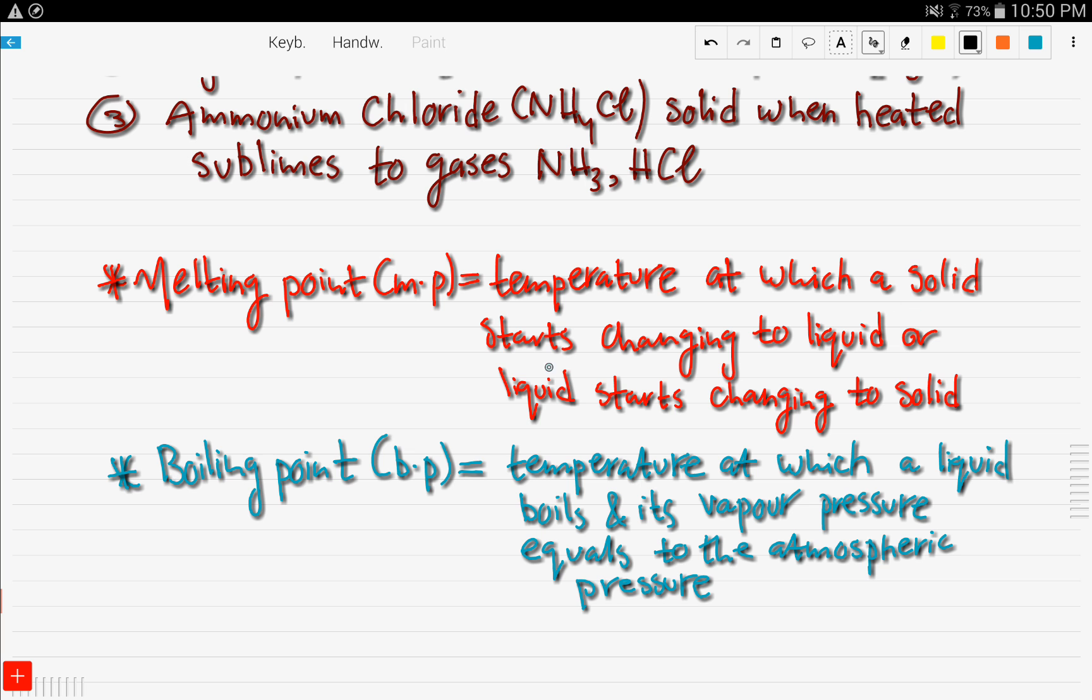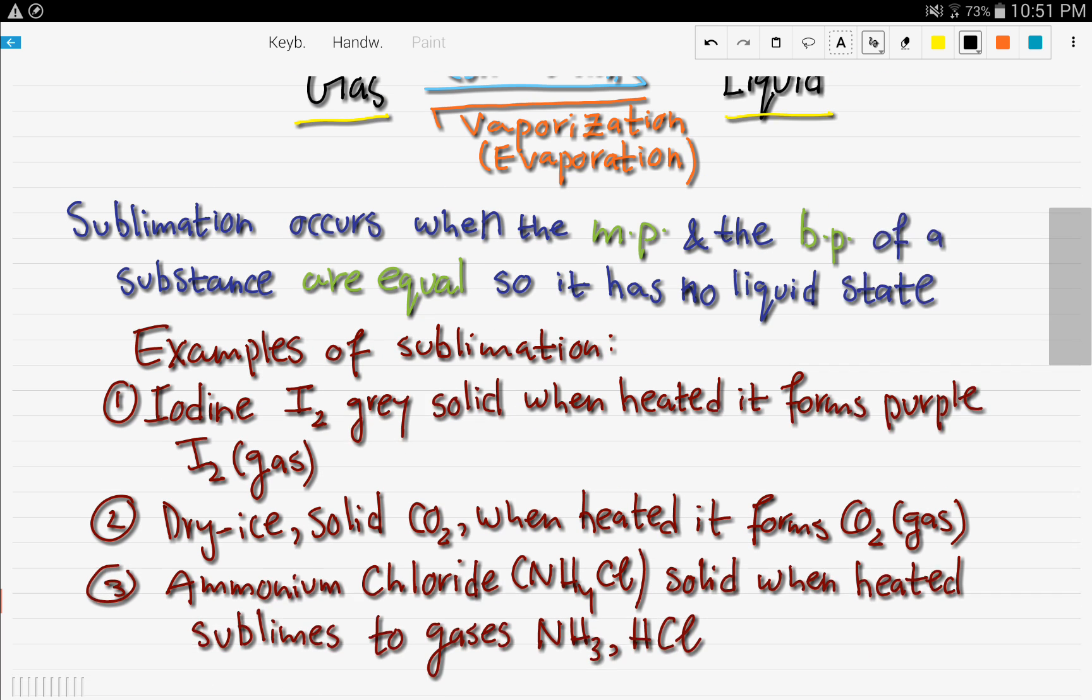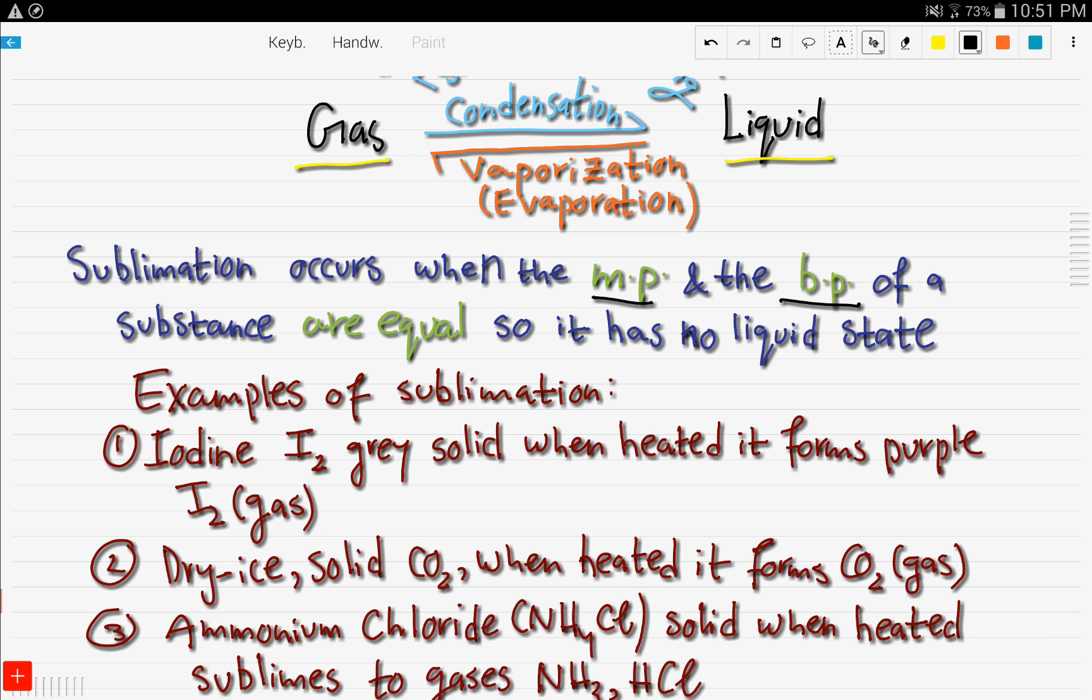Melting point is the temperature at which a solid starts changing to a liquid or a liquid starts changing to a solid. Boiling point is the temperature at which a liquid boils and its vapor pressure equals the atmospheric pressure. To change from a solid to a liquid, the temperature at which a substance changes is the melting point. And for a substance to change from a liquid state to a gas, the temperature at which it changes is the boiling point. Let's go back to the definition of sublimation. It occurs when the melting point and the boiling point of a substance are equal. So there is no liquid state in between.